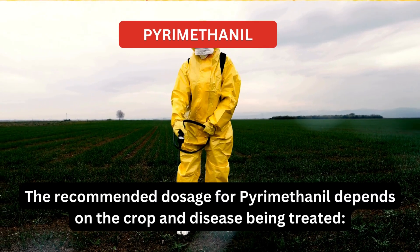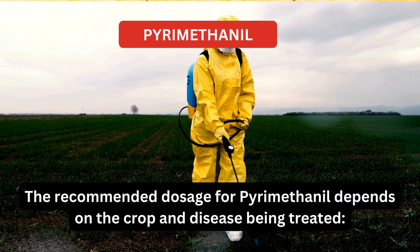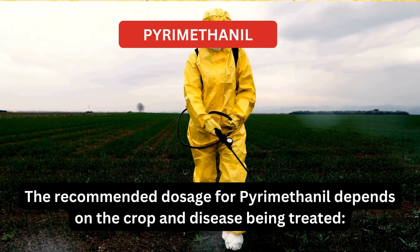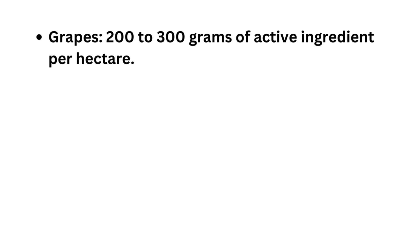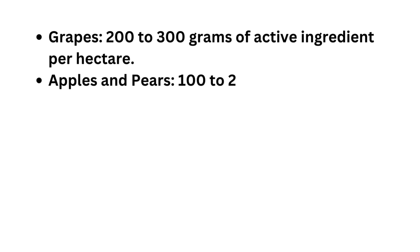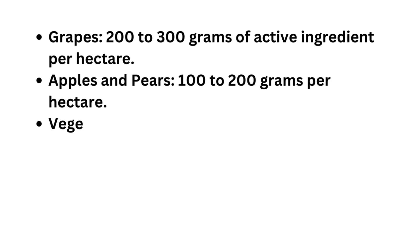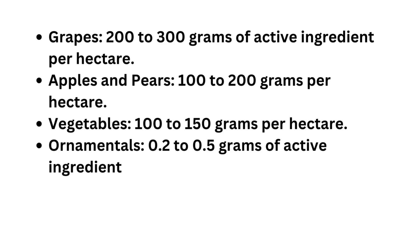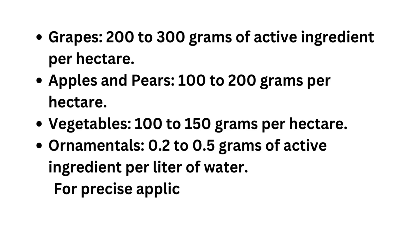The recommended dosage for pyrimethanil depends on the crop and disease being treated. Grapes: 200–300 grams of active ingredient per hectare. Apples and pears: 100–200 grams per hectare. Vegetables: 100–150 grams per hectare. Ornamentals: 0.2–0.5 grams of active ingredient per liter of water.